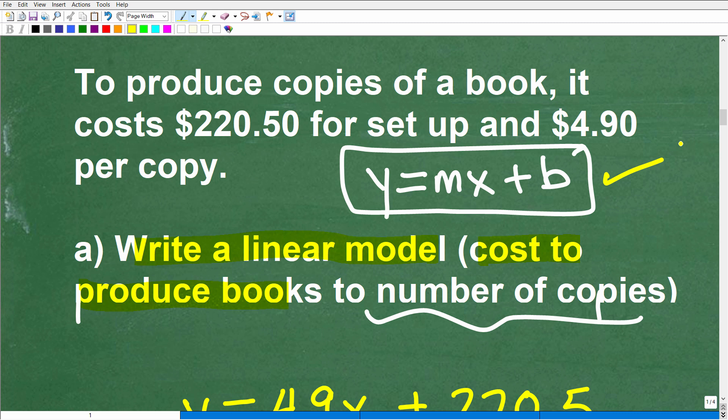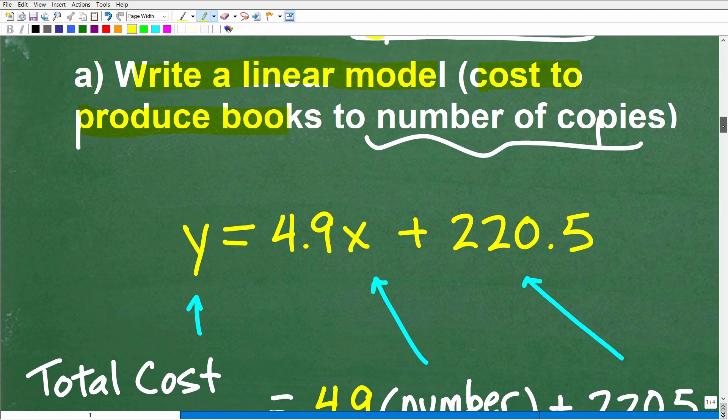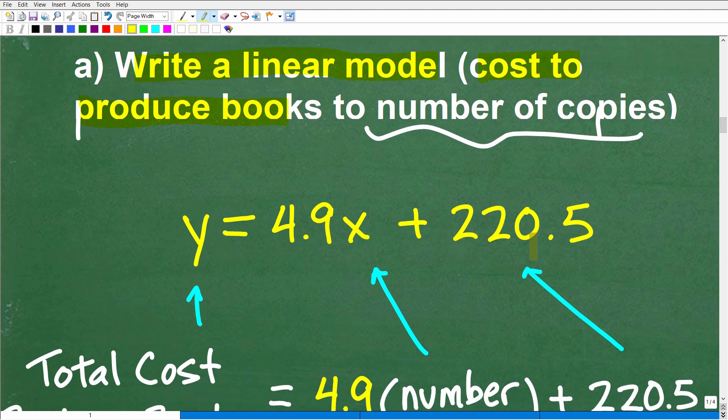So x will represent the number of books, and y would be in dollars, the total cost in dollars. So you have to be specific about this. Different ways you can do this, but I'm trying to keep it simple for this particular example. So let's think about y equals mx plus b. The input is going to be the number of copies that we'd like to have. So that would be x. And y will be how much it's going to cost us. Now, when we're thinking about this, you have to say, before we even get to produce even like one book, we're going to have to pay this $220.50 as a setup. That's a one-time fee. And then it's just $4.90 per copy. So we can construct a nice model like this. So y equals 4.9x plus 220.5.